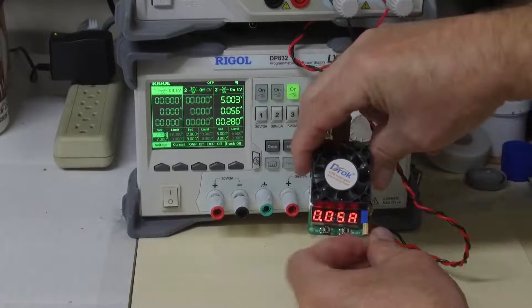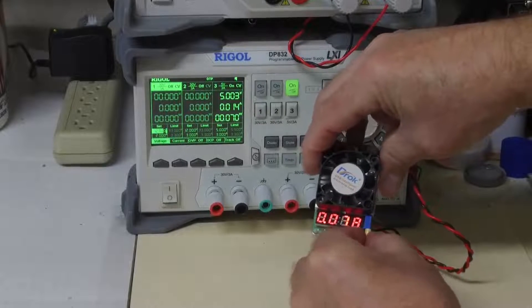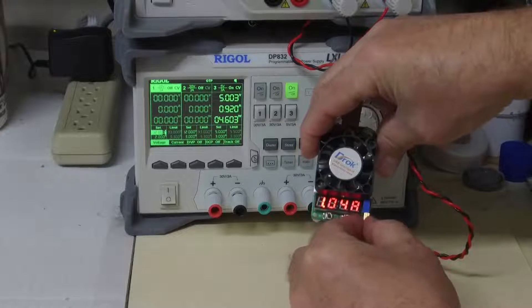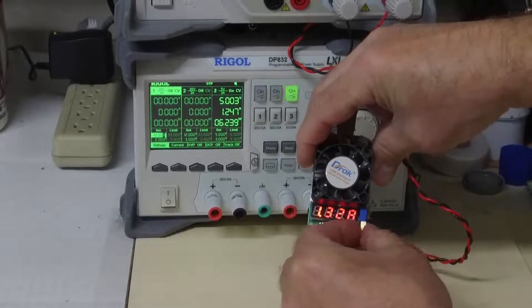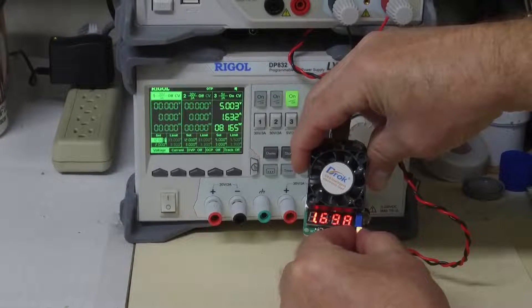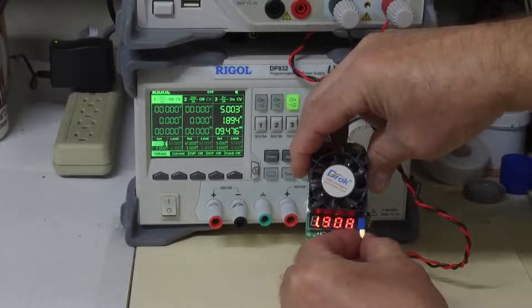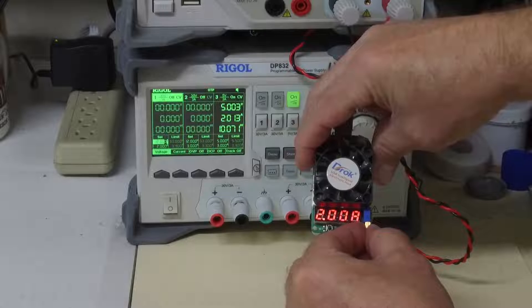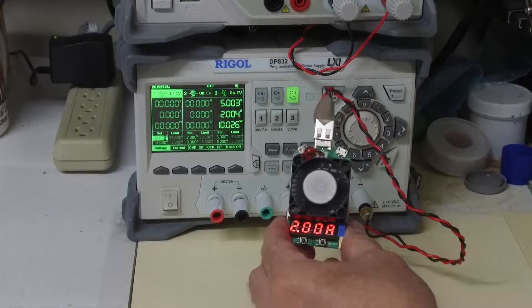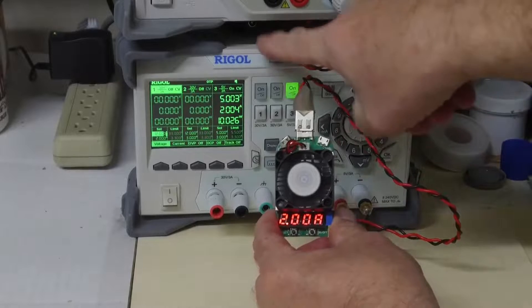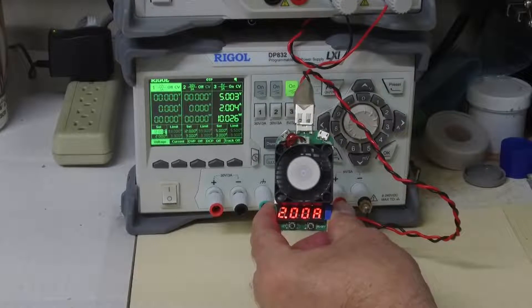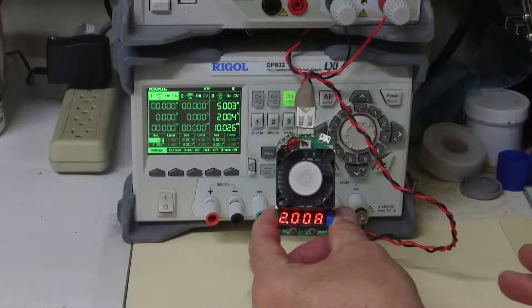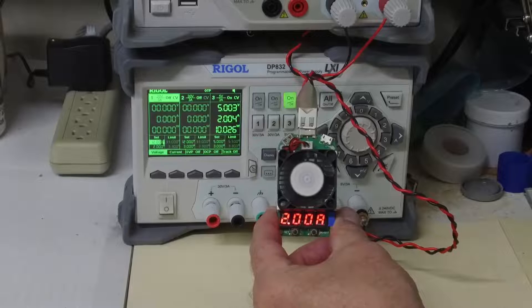Let's take this up to a higher current. Oops, wrong direction. And let's go up to say 2 amps and see how this fares. We are at 2 amps. The fan inside my Rigol power supply has kicked on. And the fan for this little guy has also turned on.